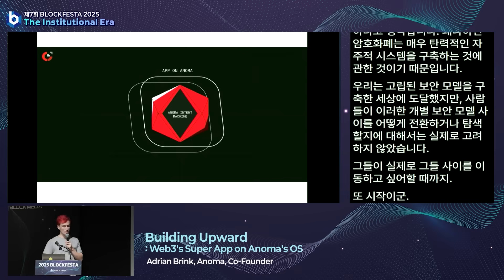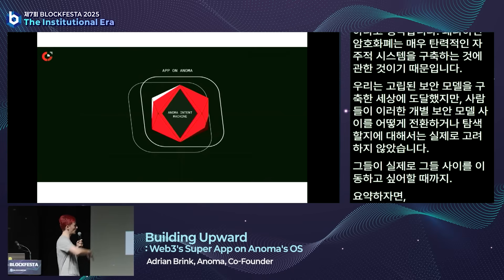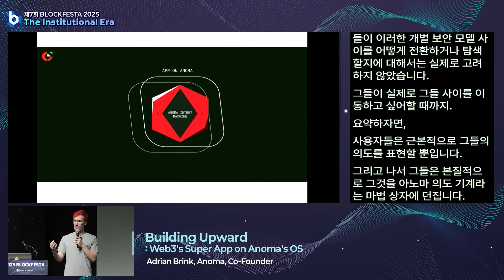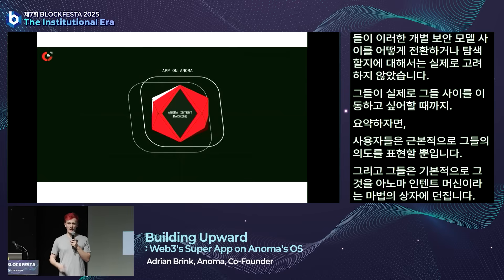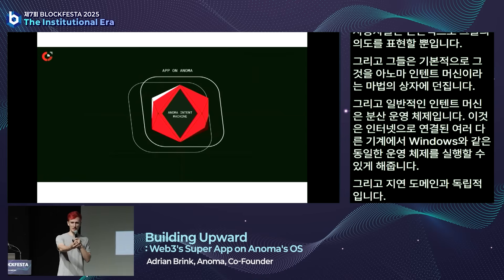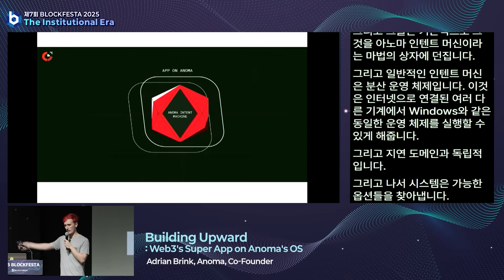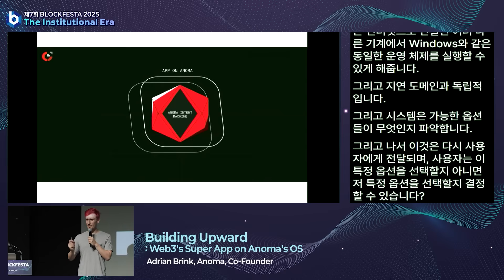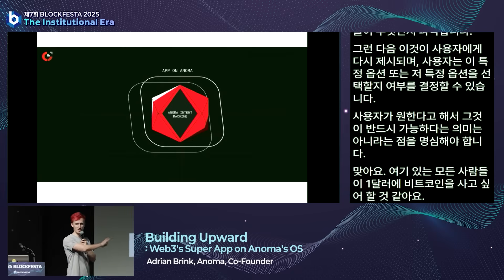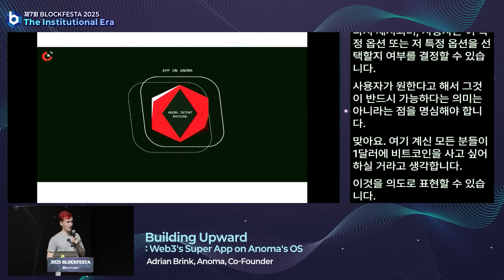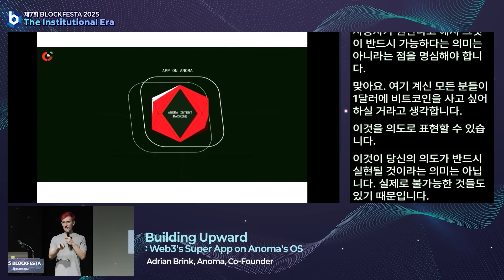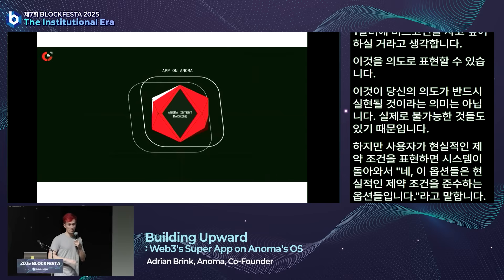To recap: users fundamentally just express their intent, and then they throw it into a magic box called the Anoma Intent Machine. The Anoma Intent Machine is a distributed operating system—the ability to run the same operating system like Windows, but on many different networked machines that are latency-domain independent. The system figures out possible options and presents them back to the user. It's important to note that just because a user wants something doesn't mean it's necessarily possible—everyone would like to buy Bitcoin for a dollar—but with realistic constraints, the system returns options that adhere to those constraints.